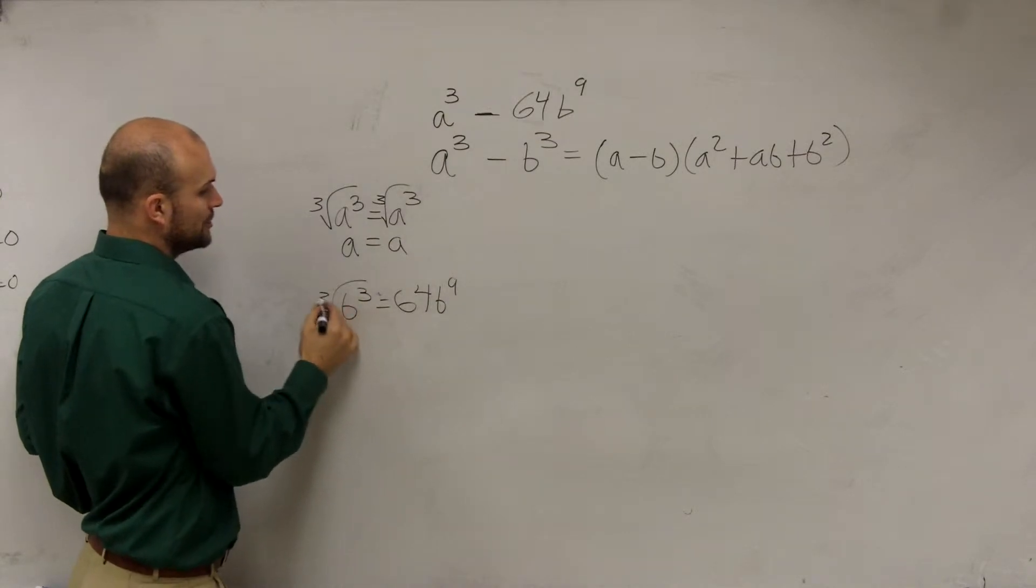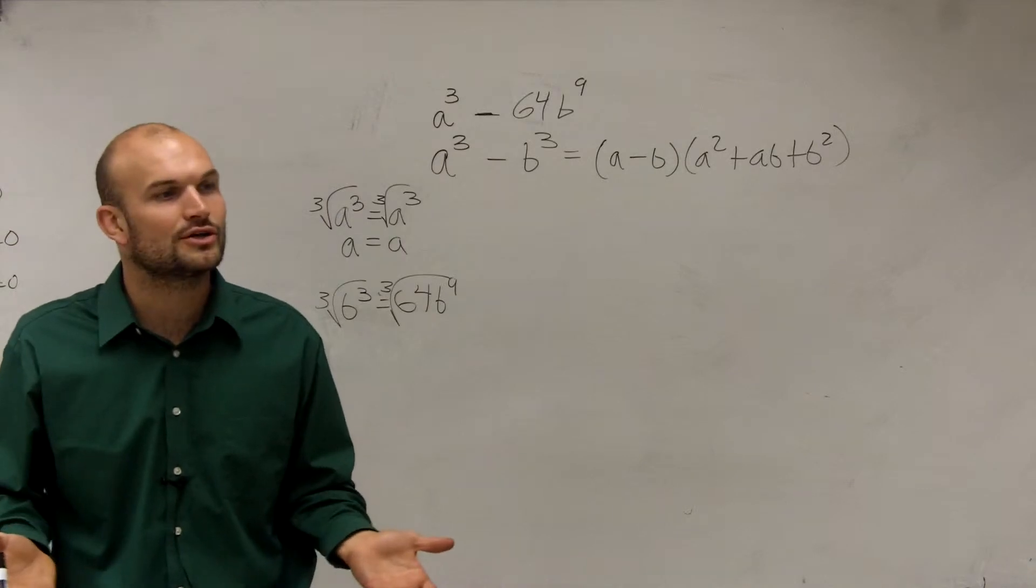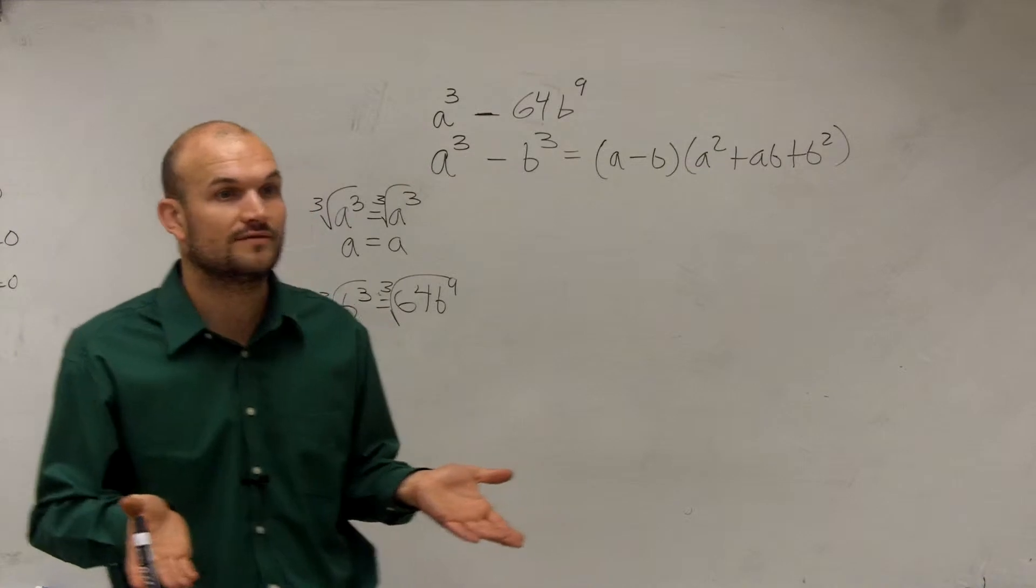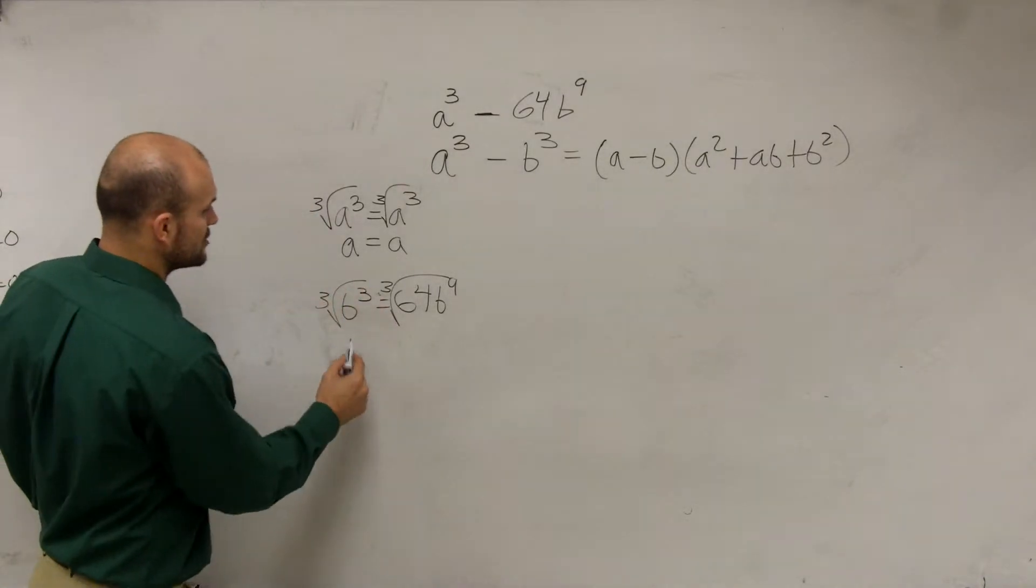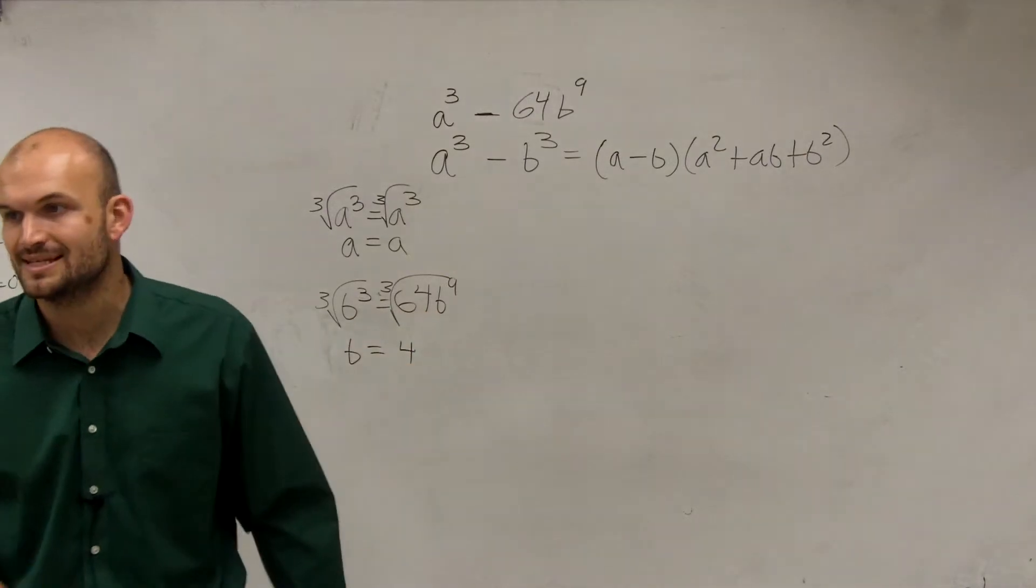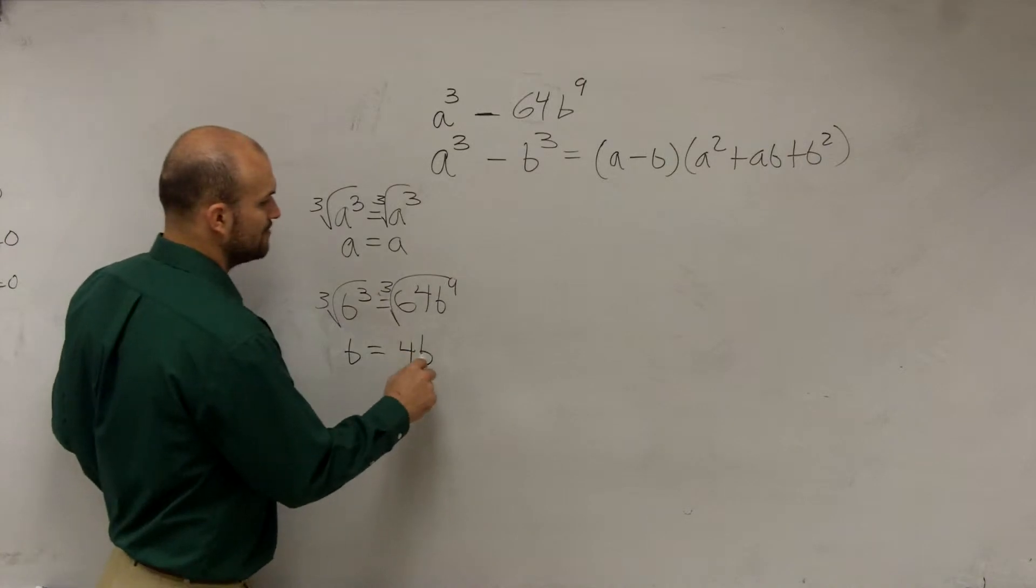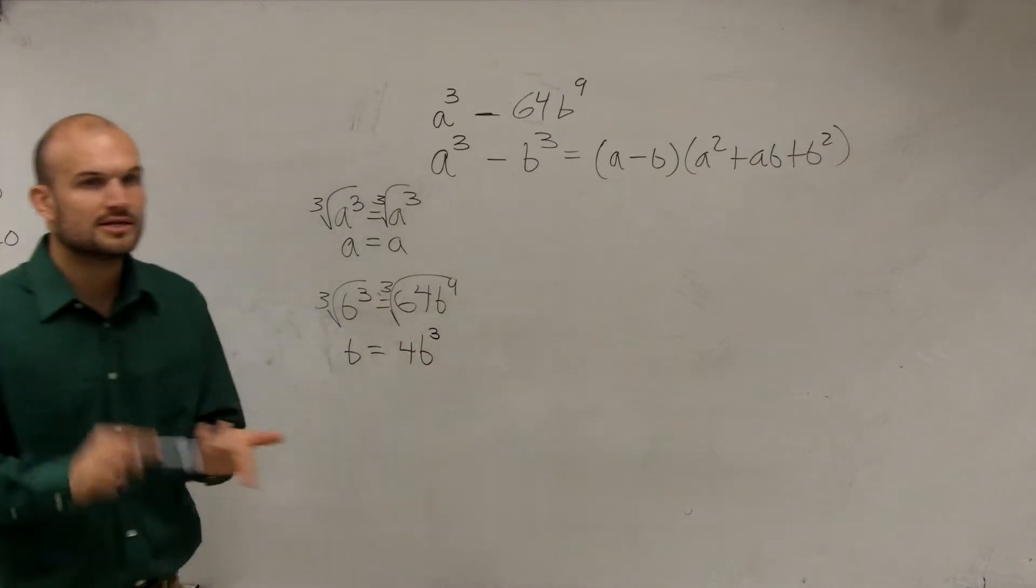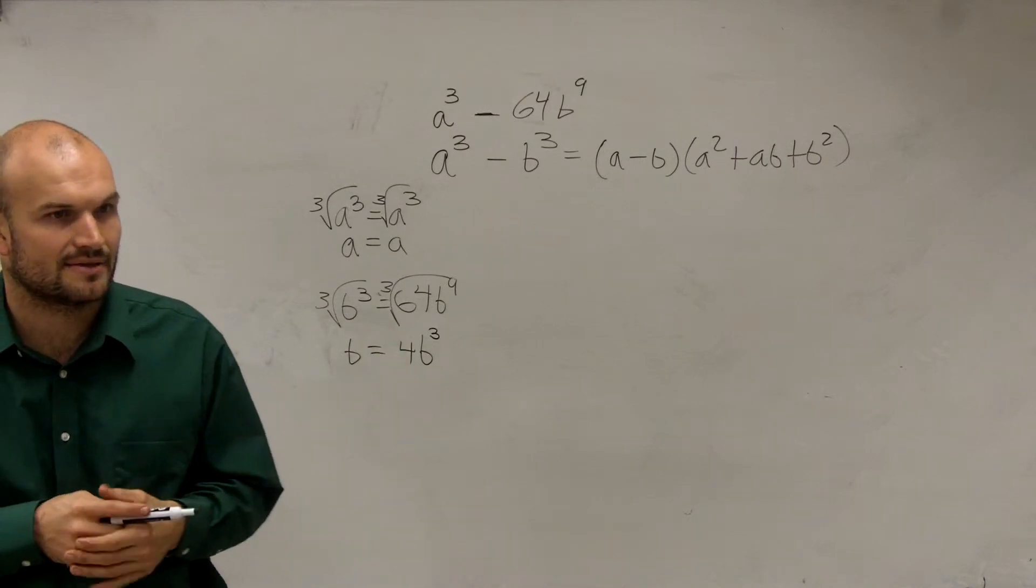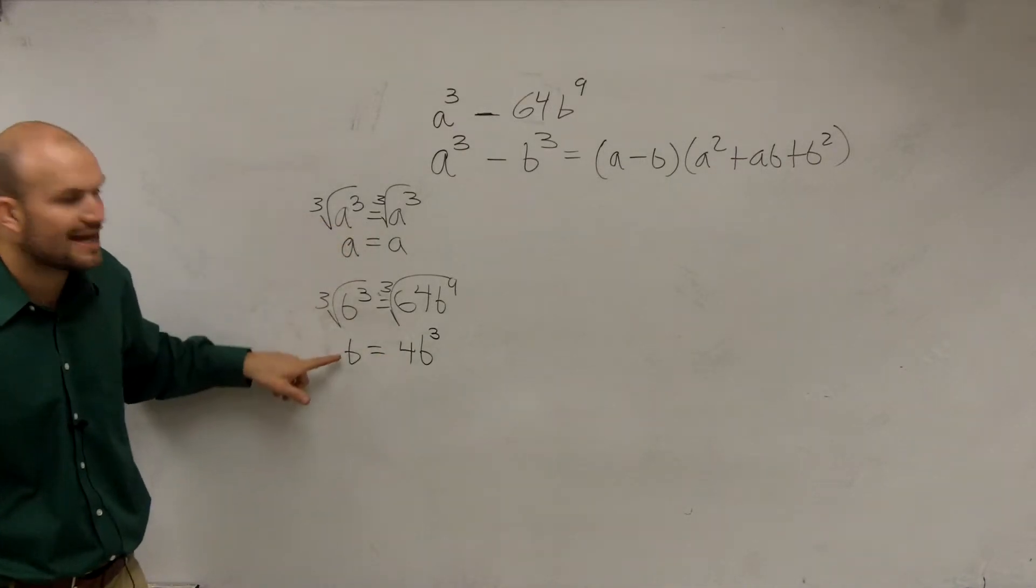Then here, I take the cube root on both sides. And I say, can 64, can I take the cube root of 64? Is there a number multiplied by itself three times that gives 64? And yes, it's four. So we could say b equals four. And then the cube root of b to the ninth is going to be b to the third power. Because b to the third power multiplied by itself three times is b to the ninth. So I now know what my a is, and I know what my b is.